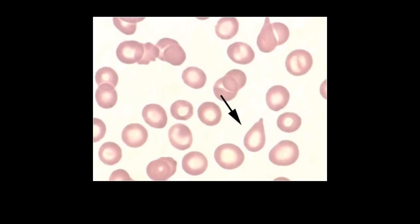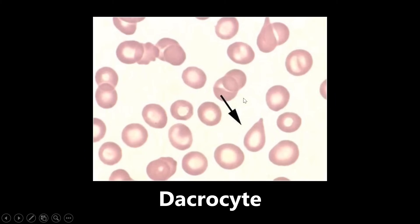This is going to be an image of a dacrocyte, and a dacrocyte is also called a teardrop cell. It is commonly seen in myelofibrosis, where the bone marrow within the body starts to become very fibrotic and thick. The reason that the cells are shaped this way is because the bone marrow is so fibrotic that as red blood cells are being produced and squeezed through the marrow, they're kind of pinched off at the tip, so they look like a teardrop, also called a dacrocyte.